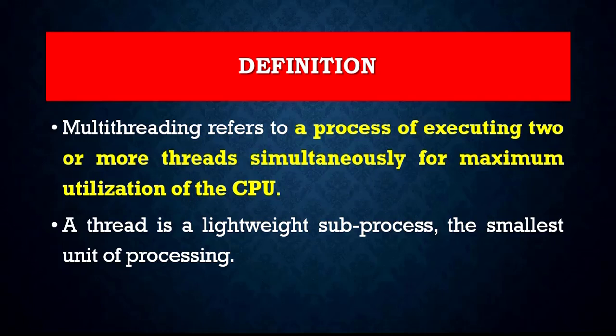In an operating system, if you want to run a process it has to reside on the main memory. So in order to run more than one process simultaneously, we use the concept of multi-threading. Here, a thread is a lightweight sub-process, or the smallest unit of processing.